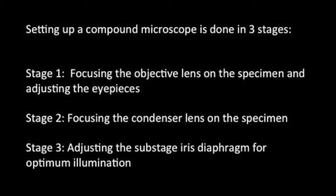Setting up the compound microscope is done in three stages. Stage one: focusing the objective lens on the specimen and adjusting the eyepieces. Stage two: focusing the condenser lens on the specimen. And stage three: adjusting the substage diaphragm for optimum illumination.